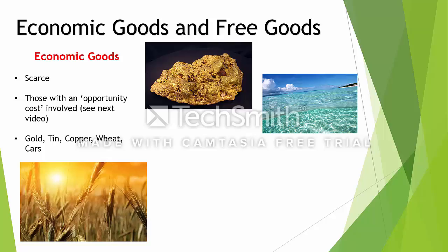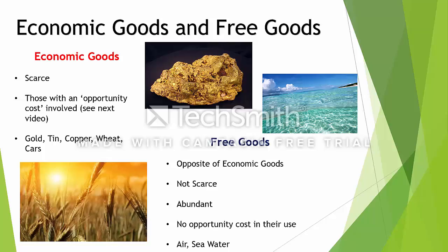Economic goods are goods that are scarce and that we have to make choices about. Free goods, on the other hand, are the exact opposite — they're not scarce, they're abundant. Don't think of them as free in the sense that you don't have to pay; it's simply that they're not scarce and by using them you don't have to give up anything — there's no opportunity cost. Examples of free goods are things like air and seawater. There aren't very many others.